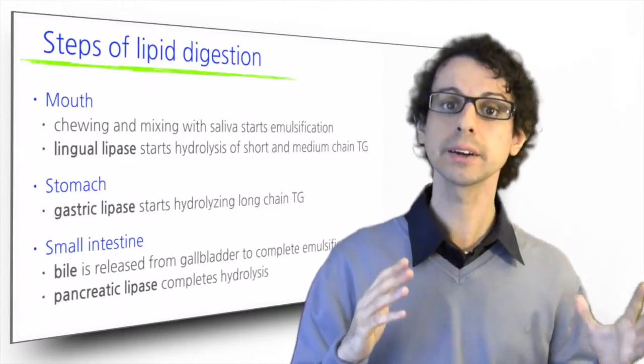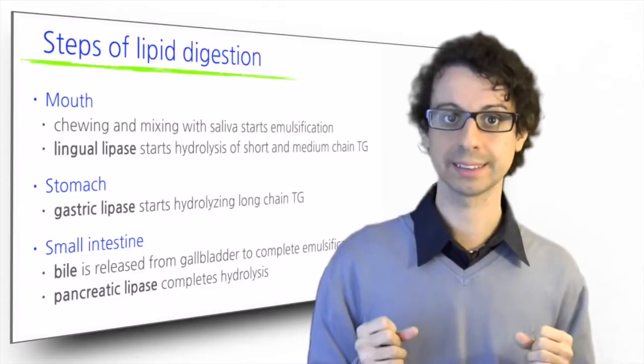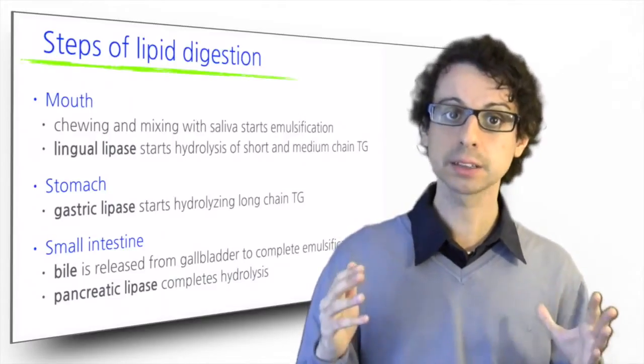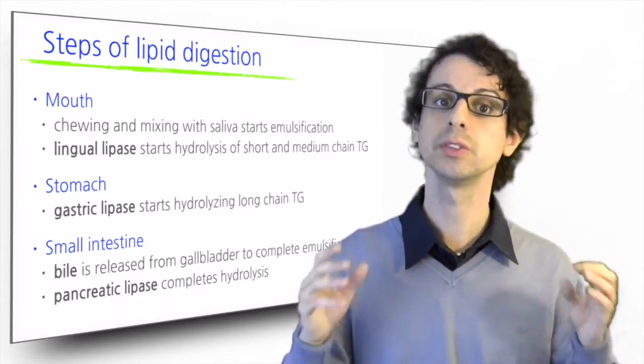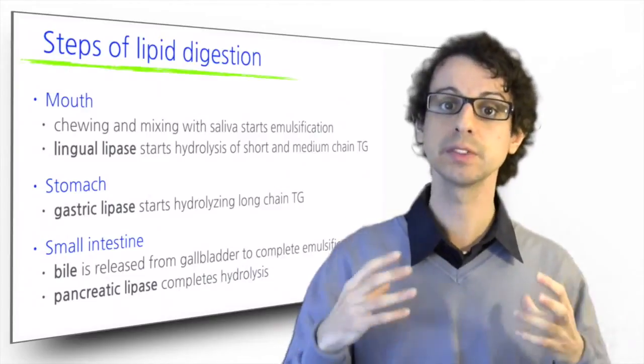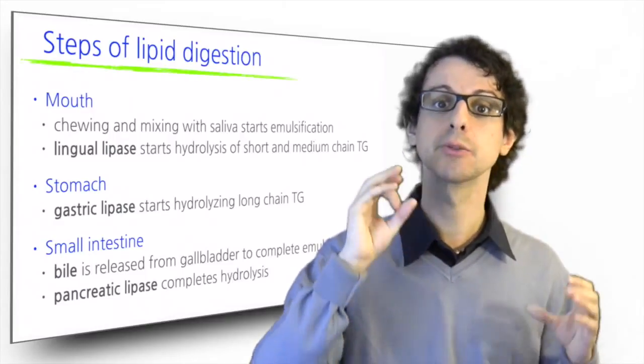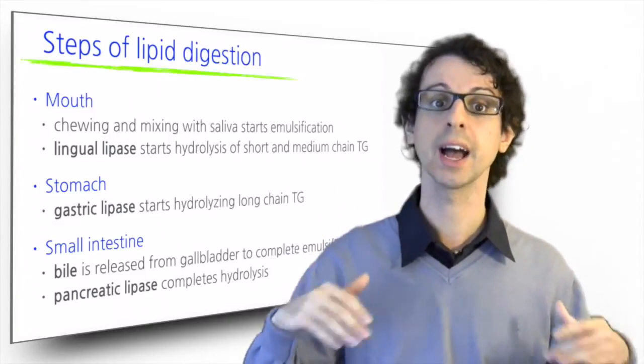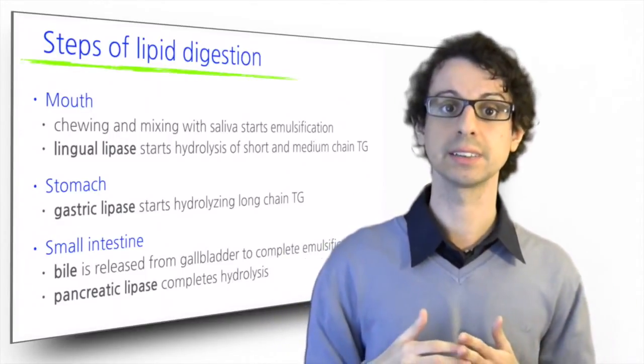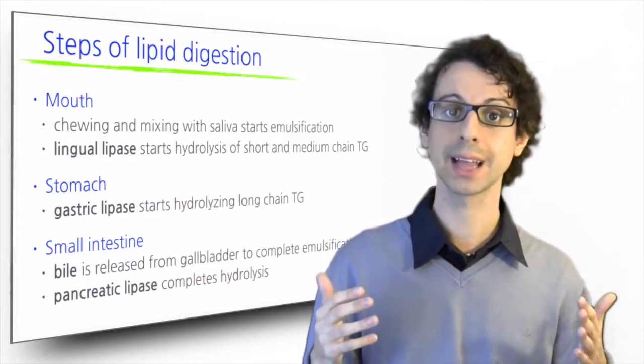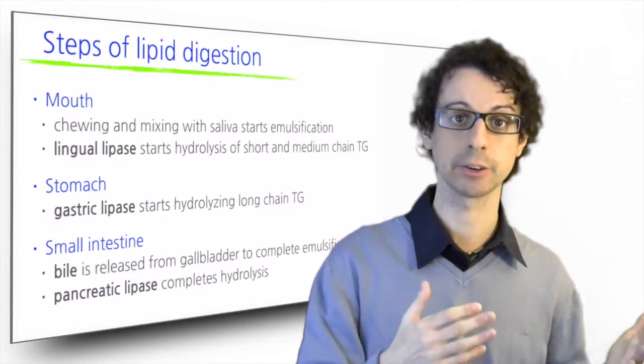Here, our gallbladder releases bile into the intestine. Bile contains bile salts and phospholipids that accomplish a very effective fat emulsification with the help of intestinal movements, creating small lipid droplets that greatly increase the surface area accessible to digestive enzymes, and in particular, pancreatic lipases released from the pancreas.